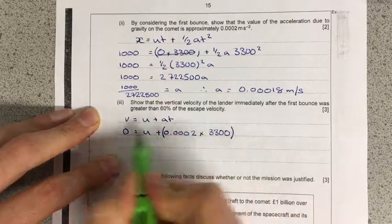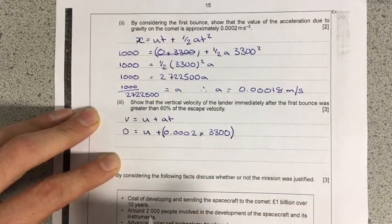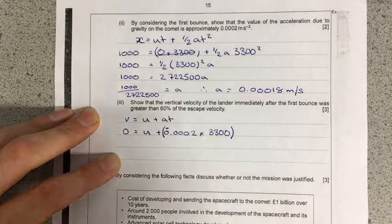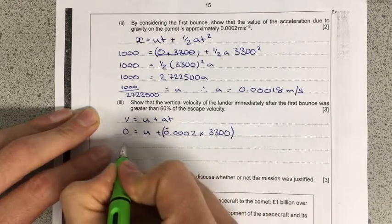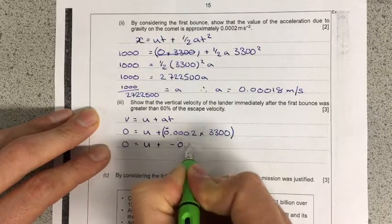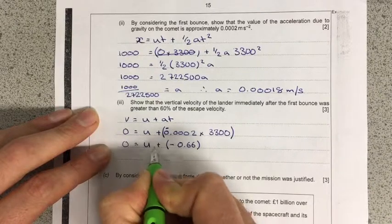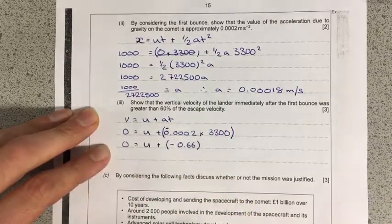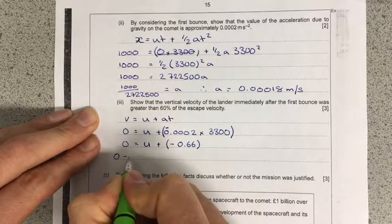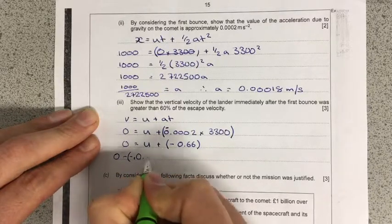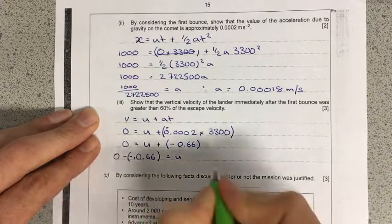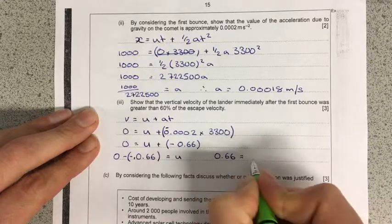So at this point you could choose to rearrange it. I've just realized something, actually. I've forgotten that this acceleration is going to be acting downwards. So I should have a minus sign that goes with it. So 0 equals U plus, and then if I multiply all of that lot together, I get minus 0.66. So as I take this over to this side to leave the U on its own, I'm going to end up with 0 minus minus 0.66 is equal to U. So this is going to give me 0.66 is equal to U.